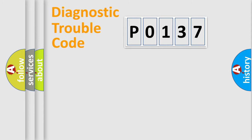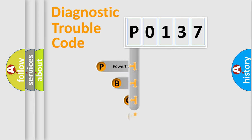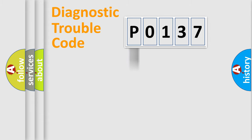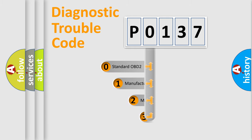Let's look at the history of diagnostic fault code composition according to the OBD2 protocol, which is unified for all automakers since 2000. We divide the electrical system of the automobile into four basic units: powertrain, body, chassis, and network. This distribution is defined in the first character of the code.